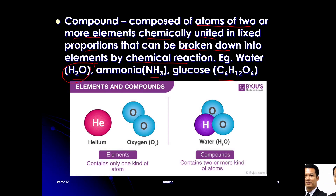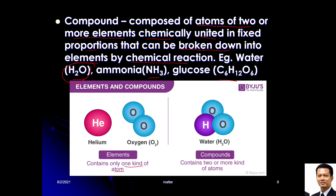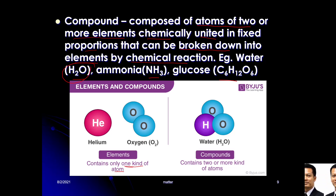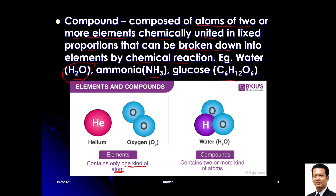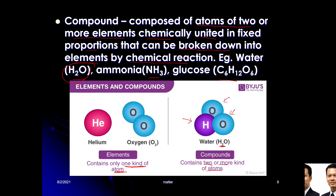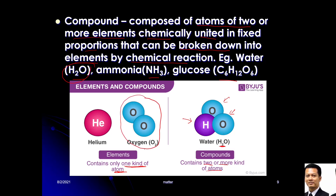Elements contain only one kind of atom. Helium is monoatomic and oxygen is diatomic — even though oxygen has two atoms, it is still considered an element because it contains only one kind of atom. Compounds contain two or more kinds of atoms: H₂O contains hydrogen and oxygen, so it is a compound, not an element. But oxygen by itself is an element.